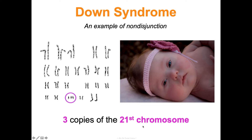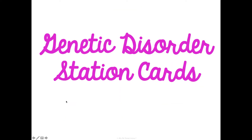An example of non-disjunction is Down syndrome, where the individual ends up with three copies of the 21st chromosome — trisomy 21. Either the egg or the sperm had one extra copy of chromosome 21. This is my beautiful niece, who has trisomy 21.